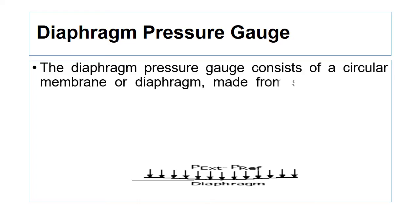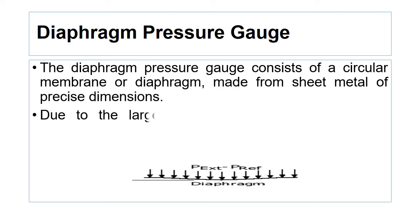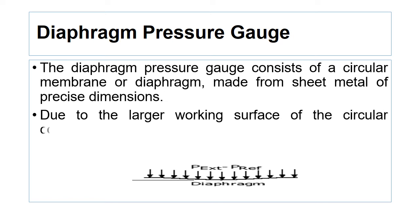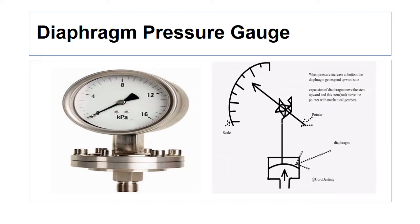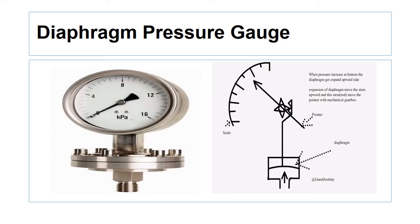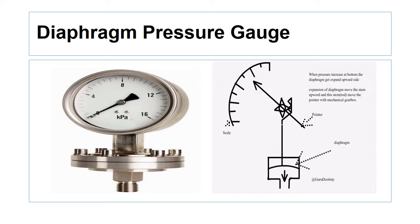Due to the larger working surface of the circular corrugated diaphragm element, small pressures can be measured accurately. The diaphragm is mechanically connected to a transmission mechanism which can amplify the small deflections of the diaphragm and transfer them to the pointer. The lower side of the diaphragm is open to the pressure to be measured, while the upper side is at atmospheric pressure.